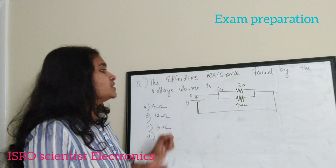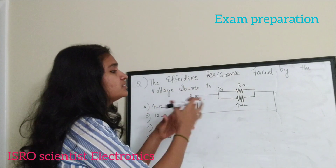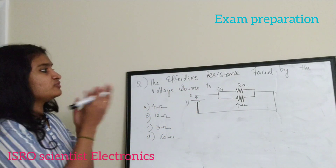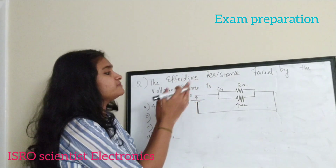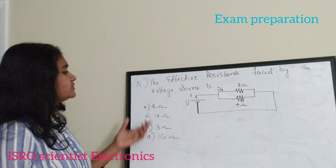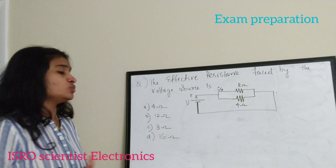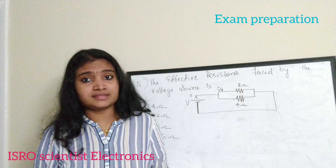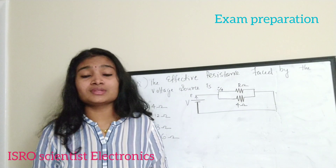The first question: the effective resistance faced by the voltage source is dash. There is a network given and we have to solve it to find the effective resistance faced by this voltage source. The options given are 4 ohm, 12 ohm, 3 ohm, and 16 ohm. This question is from network analysis.